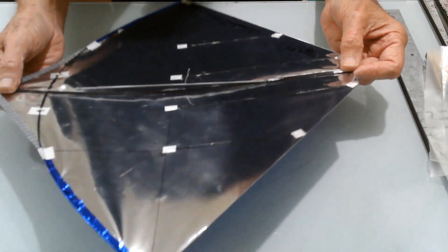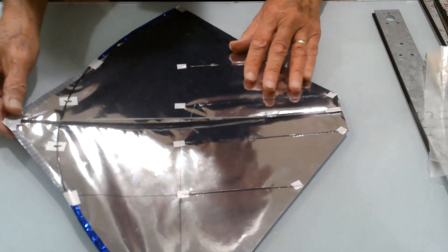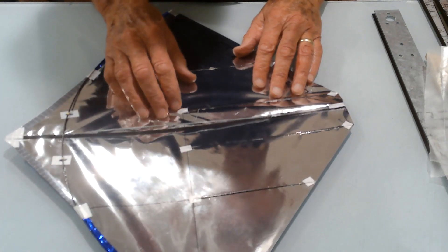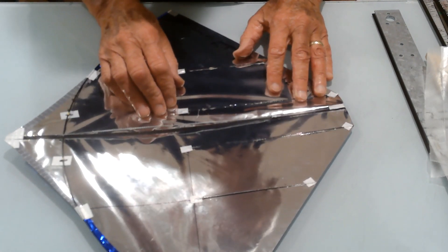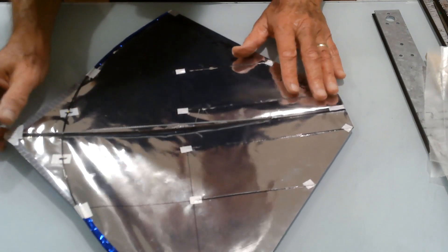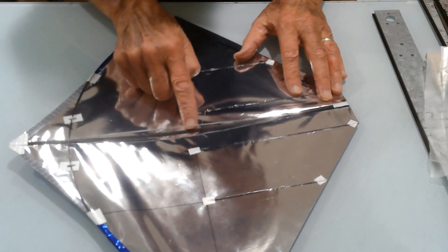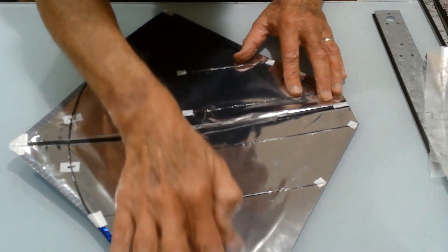On this kite, I'm experimenting where that bend might be the most optimum location. Right now, it's right about at the wingtip line where it crosses the spine.